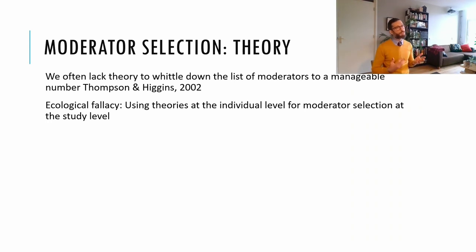There are different ways in which we could make a selection out of potential candidate moderators. One way is to use theory. But we often lack theory that is suitable to whittle down the number of candidate moderators. Now you may think, my field is strongly based on theory, so I can make a good pre-selection. However, keep in mind that the ecological fallacy dictates that we cannot use theory at the individual level to perform moderator selection at the study level of analysis.